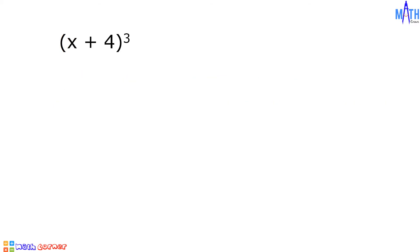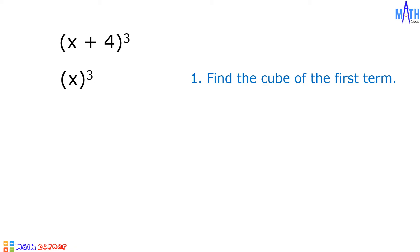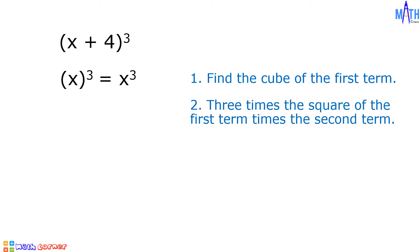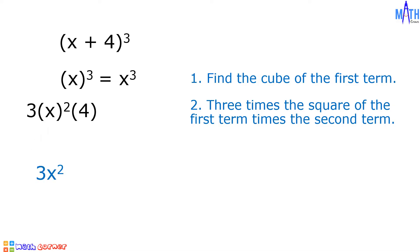Example number 3: what is the cube of x plus 4? Step number 1: cube of x is equal to x cubed. Step number 2: 3 times the square of the first term times the second term. 3 times square of x times 4. 3 times square of x is equal to 3x squared. Times 4 equals 12x squared.